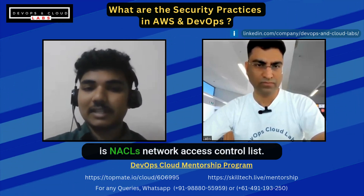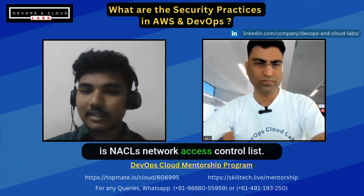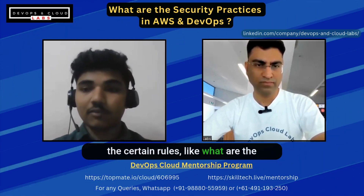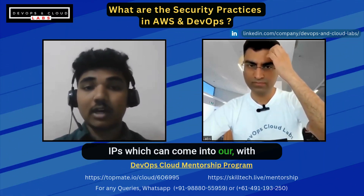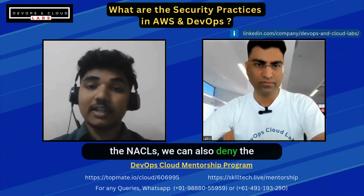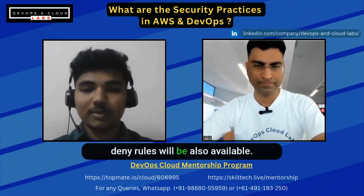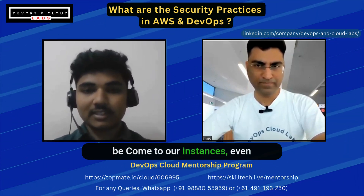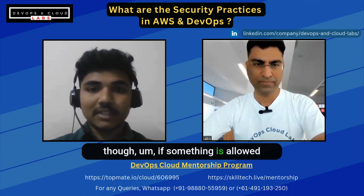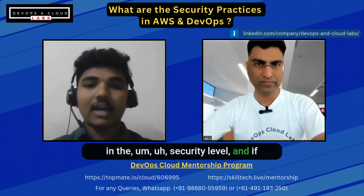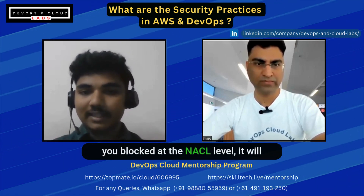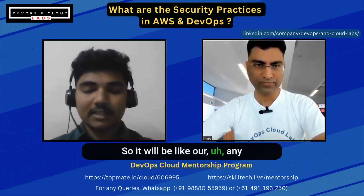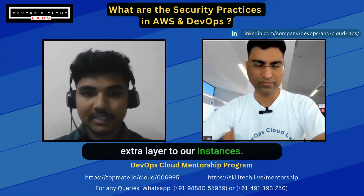One more security measure we can do at the subnet level, which is NACLs — Network Access Control Lists. We can create certain rules about which IPs can come in. With NACLs, we can also add deny rules — we can deny what should not reach our instances. Even if something is allowed at the security group level, if it is blocked at the NACL level, it will be blocked there. So it acts as an extra layer of security for our instances.